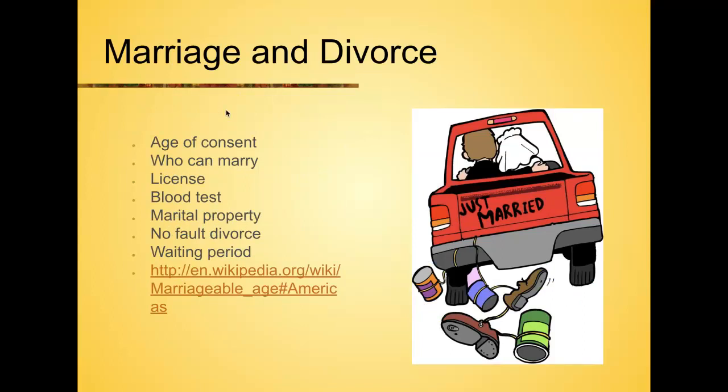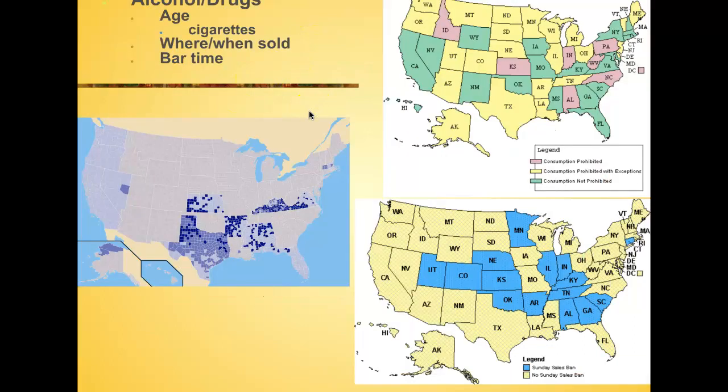Marriage and divorce laws differ by state. The age of consent to marry varies — is it 18, or 16? Some states permit marrying cousins while others don't. Some states require a blood test for a marriage license to confirm you're not related. Marital property laws vary — is it split from the beginning? Some states allow no-fault divorce, where you simply don't want to stay together, while others require a reason. Some states impose a waiting period before marriage.